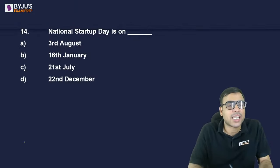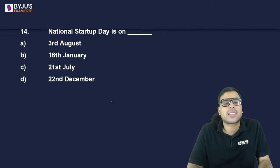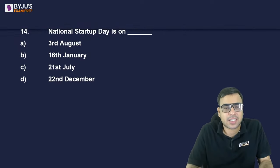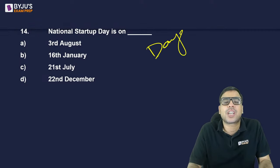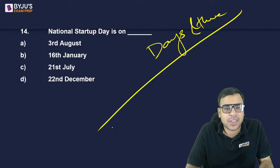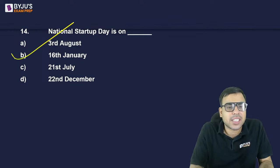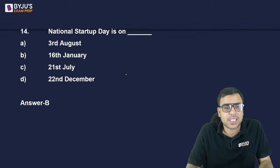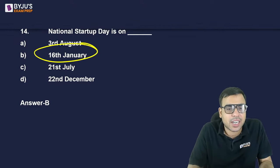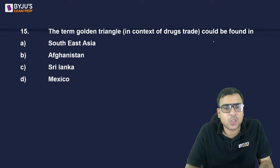National Startup Day — when is it celebrated? 3rd August, 16th January, 21st July, or 22nd December? Famous days and their themes are asked in exams. The right answer is 16th January — B. It was declared last year and has been in the news since then.